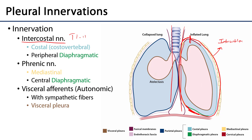The phrenic nerves also innervate the medial portion of the cervical pleura, so this portion of the parietal pleura will report via the phrenic nerves. Finally, the visceral pleura, adhered directly to the lung, is innervated via the pulmonary plexuses. These are the autonomic plexuses which serve the lungs, and the visceral afferent fibers — recall that visceral afferent fibers are neither sympathetic nor parasympathetic — will travel with the sympathetic fibers back to the central nervous system.